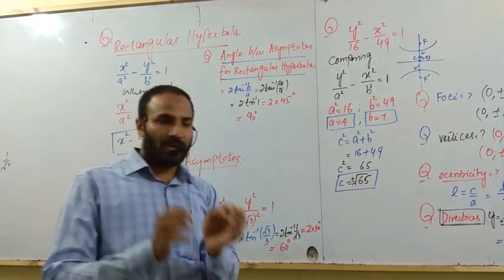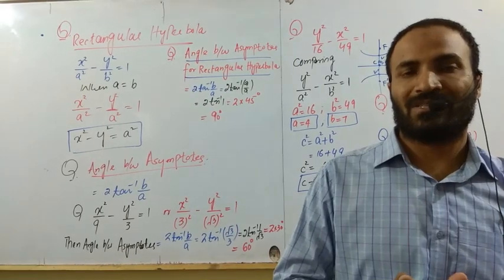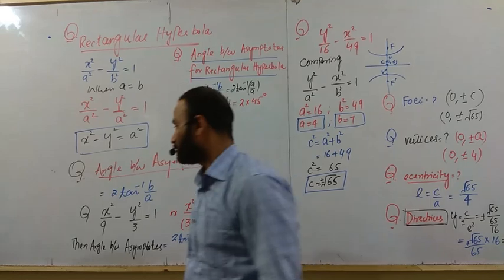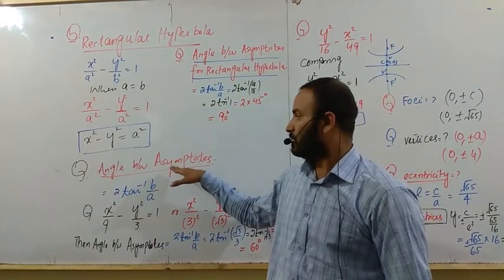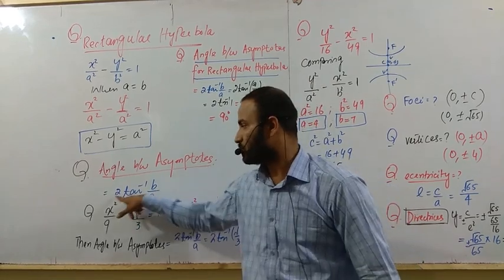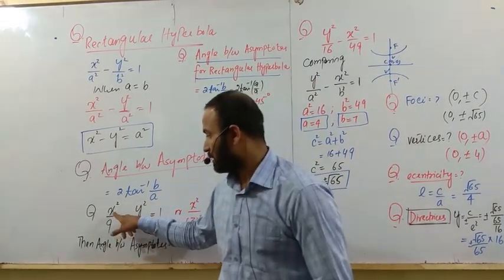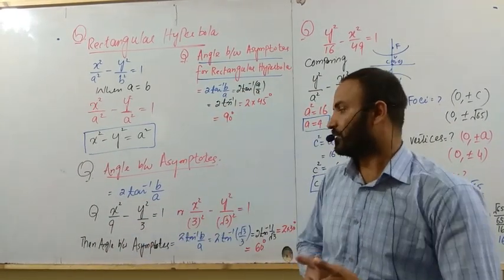The next very important question, which appears many times in different university exams: what is the angle between the asymptotes? The value of the angle between asymptotes is 2tan⁻¹(B/A). I have a question: x²/9 - y²/3 = 1. This is hyperbola standard equation.